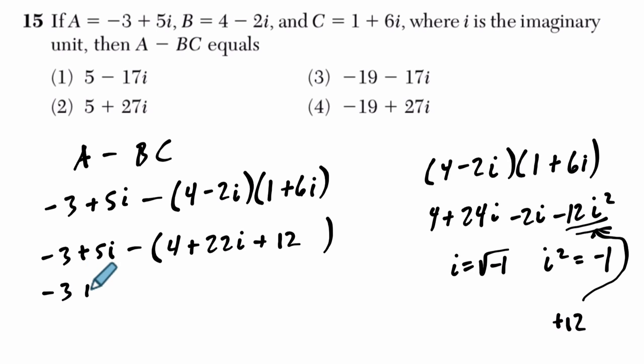And then we're going to reverse it again because negative 3 plus 5i, now we're subtracting everything. So it's minus 4, minus 22i, and minus 12.